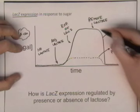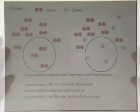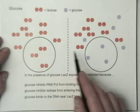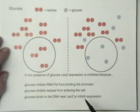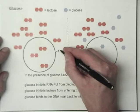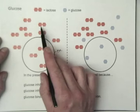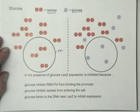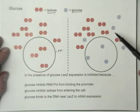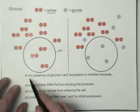So now we're going to look at how glucose influences the regulation of lacZ. This comparison gives you an idea of how the interaction between lactose and glucose in the cell takes place. This double line represents the plasma membrane of a cell. The orange hexagons represent lactose, and the blue hexagon represents glucose. On one side there's only lactose in the environment and inside the cell. On the other side, both lactose and glucose are present in the environment, but only glucose is inside the cell. So in the presence of glucose, lacZ expression is inhibited.